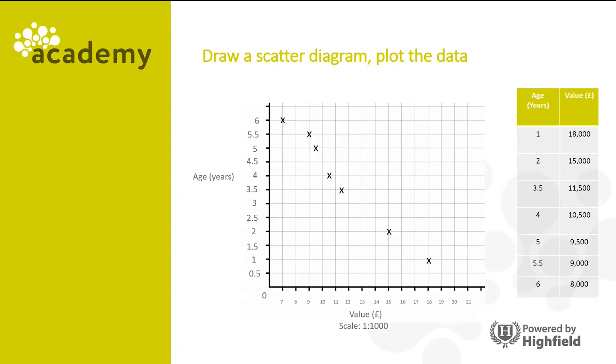This is what your scatter diagram should look like once the data is plotted. And as you can see, as the age increases, the value of the cars decreases. Therefore there is negative correlation.